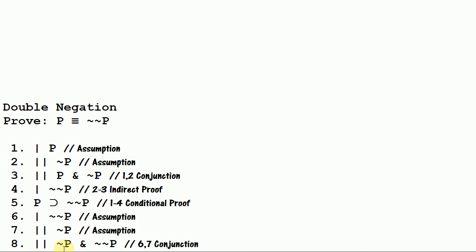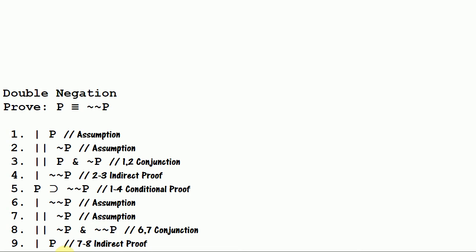We immediately get a contradiction by conjoining these two assumptions here — not P and not not P is a contradiction. So we immediately close off that indirect proof and we get P from lines seven through eight by indirect proof. And in this instance we drop the tilde — up here we added a tilde. So we started with the same assumption but just took the indirect proof in a different direction each time: adding a tilde in one case, subtracting one in the other. So you can do an indirect proof either way.